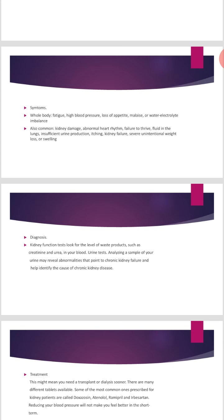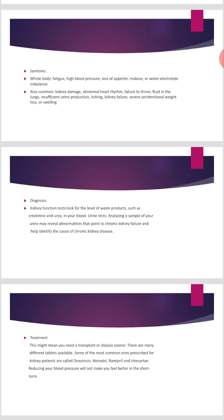To summarize diagnosis: a kidney function test measures waste products such as creatinine and urea in the blood. A urine test analyzes a sample of urine and may reveal abnormalities that point to chronic kidney failure and help identify the cause of chronic kidney disease. Sometimes kidney damage can be identified through a urine test.